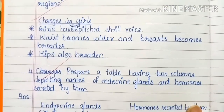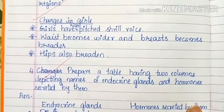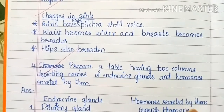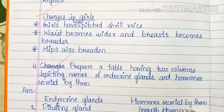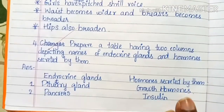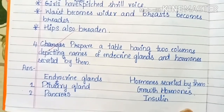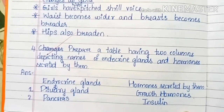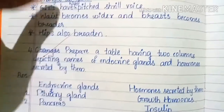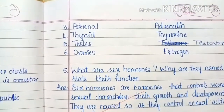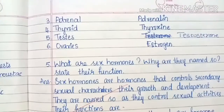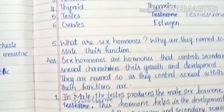Prepare a table having two columns depicting names of endocrine glands and hormones secreted by them. Pituitary gland — growth hormone. Pancreas — insulin. Adrenal — adrenaline. Thyroid — thyroxine. Testis — testosterone. Ovaries — estrogen.